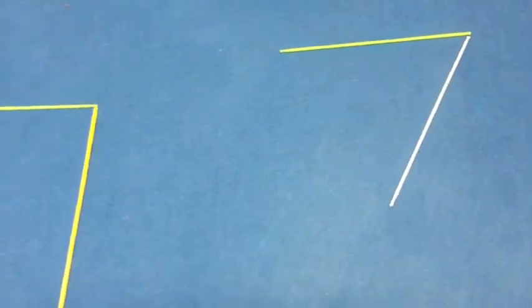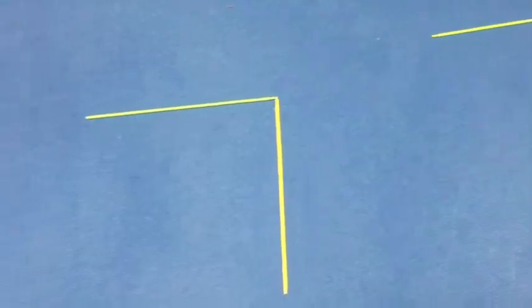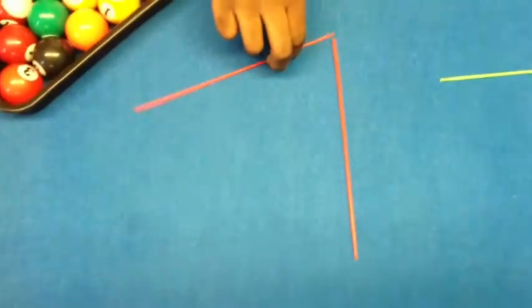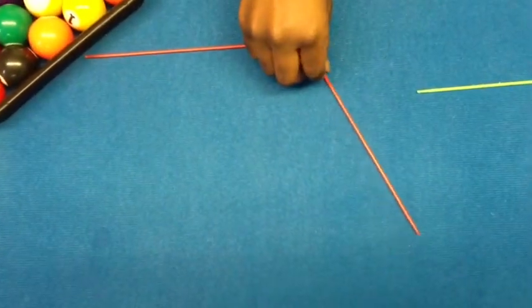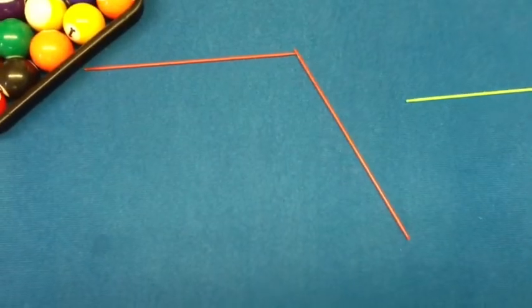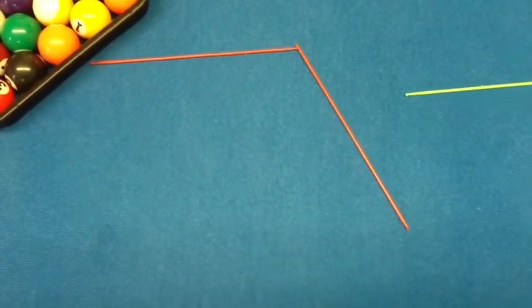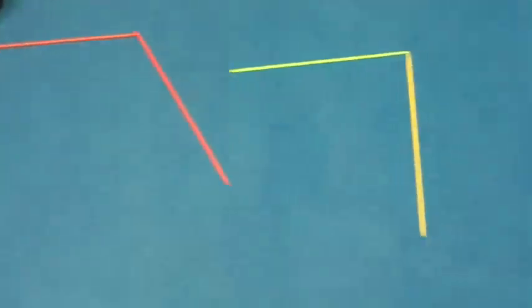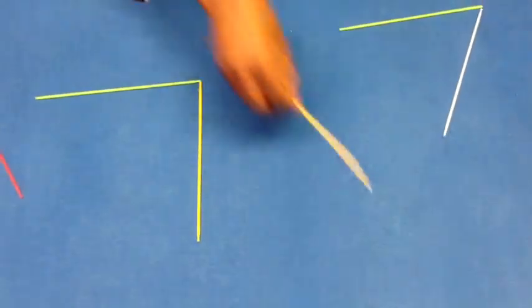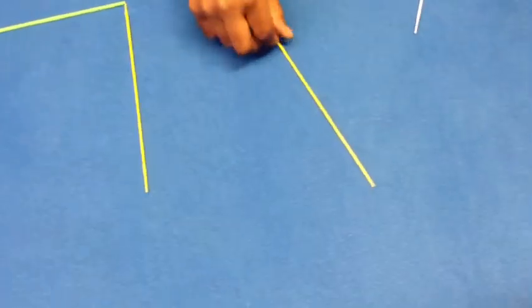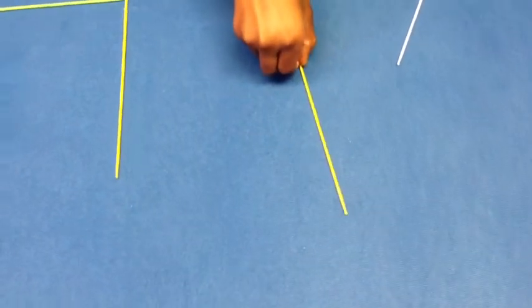Now I'm going to show you the obtuse angle. This obtuse angle is more than 90 degrees. Now I'm going to show you the bisector angle.